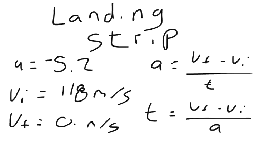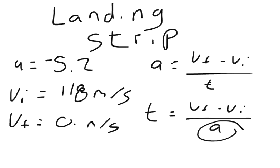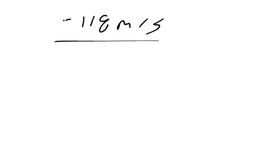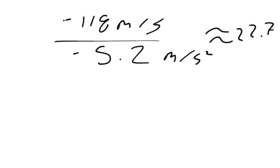So our VF minus our VI is going to be negative 118 meters per second, divided by the acceleration, which is negative 5.2 meters per second squared. And that should give us our time, which is approximately 22.7 seconds.